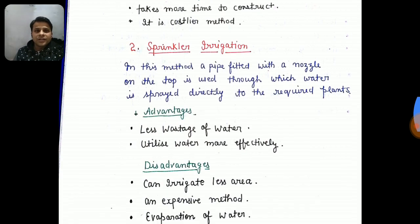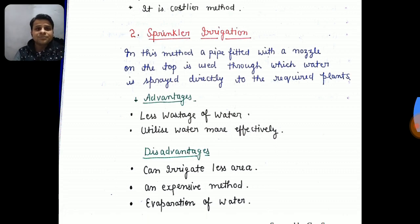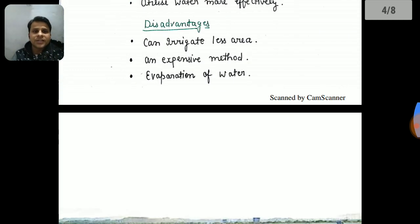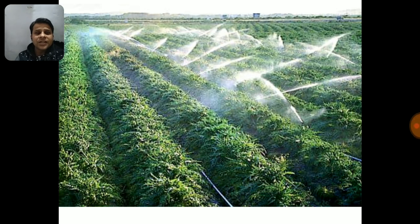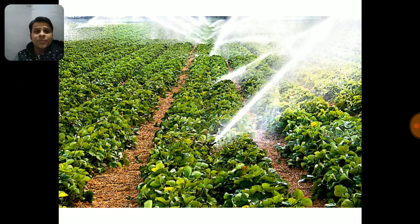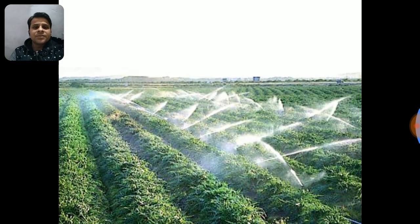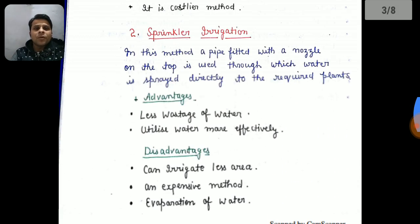The second method is sprinkler irrigation. Like the name suggests, what happens in this method is that a pipe fitted with a nozzle on top is used, through which water is spread directly to the required plants. There are many pipes placed with nozzles that spread water over four rows, and water is distributed properly over the area where plants and crops are placed.